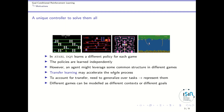To account for transfer, we need to generalize over the different tasks or games, so we need to represent these different tasks or games or different goals. Different games can be modeled as different contexts or different goals. By representing the goal, a single agent may be able to play different games using different goals, and leverage the common structure of these games into a common policy. That's the general idea of goal-conditioned reinforcement learning.